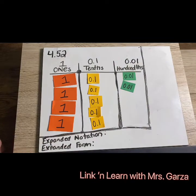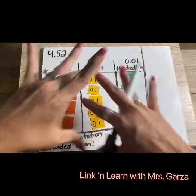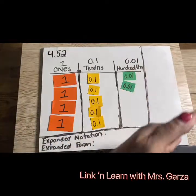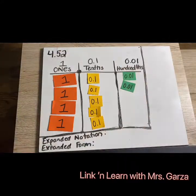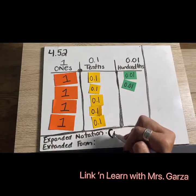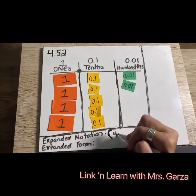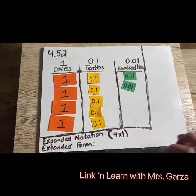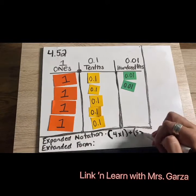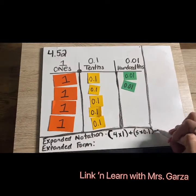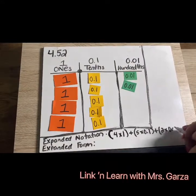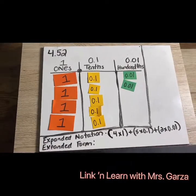So with expanded notation, all you're doing is using the concrete model that you just created and bringing it down and understanding what each relationship means or each value means. With expanded notation, I have how many ones — and I use my parentheses. I have four and each value is one, so four wholes: four times one. Plus I have tenths — I have five tenths, so it'd be five times 0.1. Plus then I have two times 0.01. That is expanded notation.